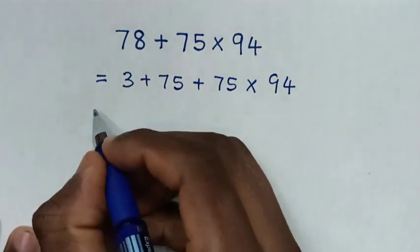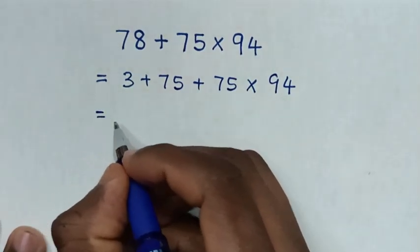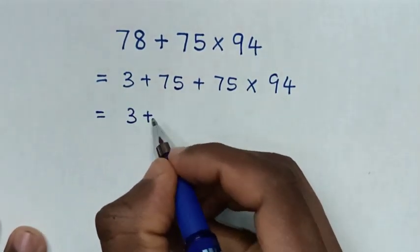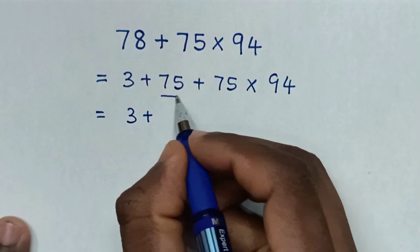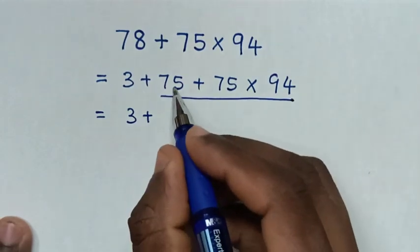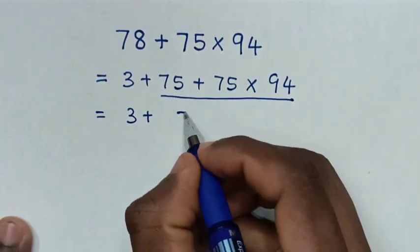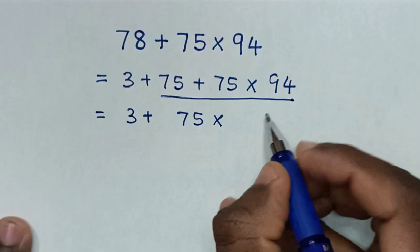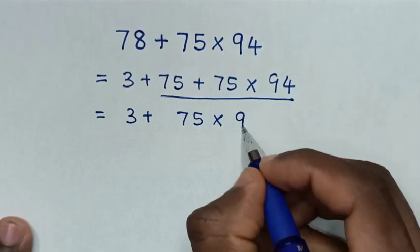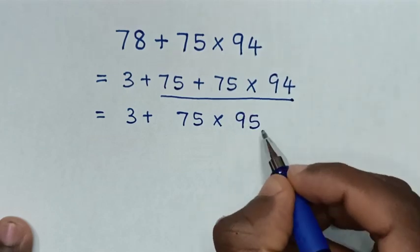So it will be equal to 3 plus, from here, 75 is common, times 94 plus 1, which is 95.